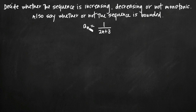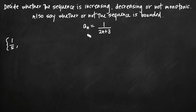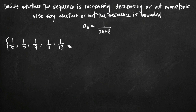We need to figure out whether or not this sequence is always increasing or decreasing. The easiest way to get a quick feel is to start listing out the terms. Starting at n equals 1, we get 1 over 2 plus 3, which is 1/5. For n equals 2 we get 1/7, for n equals 3 we get 1/9, and continuing we'd get 1/11, 1/13, etc.